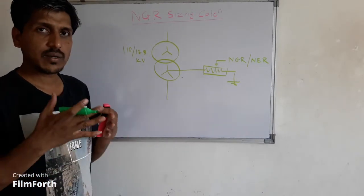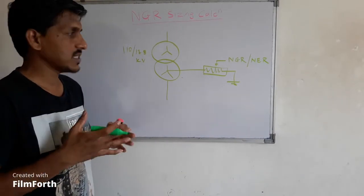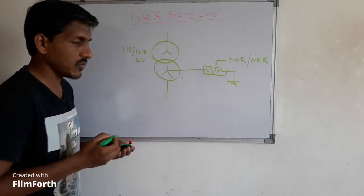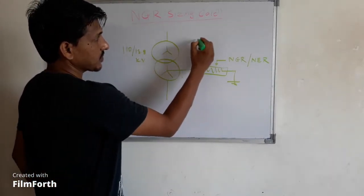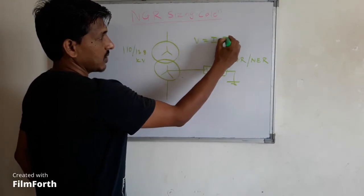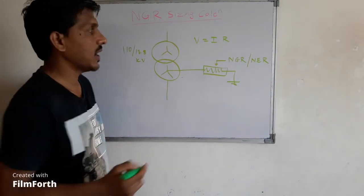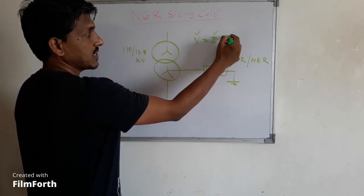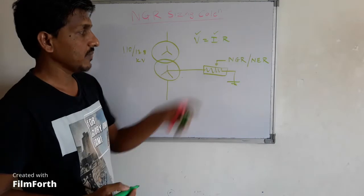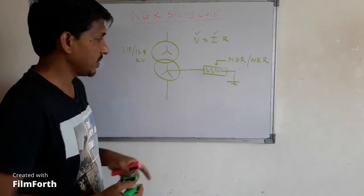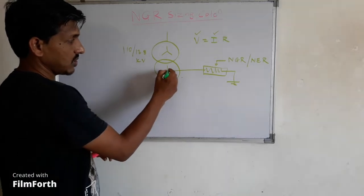Basically, doing the NGR sizing means you have to calculate the value of this resistance. We all know the simple formula V = IR. If we have a voltage and a current value, we can easily calculate the R value. The same formula gets applied here for NGR calculations.